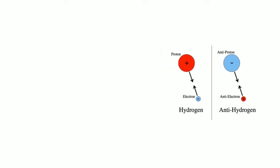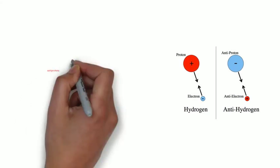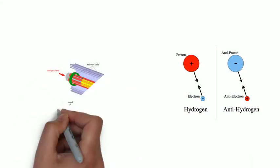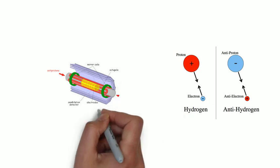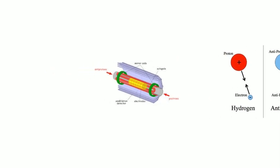These antimatter elementary particles can be used to make antimatter atoms in the laboratory. Although antimatter particles can be generated in a laboratory, they do exist in nature.